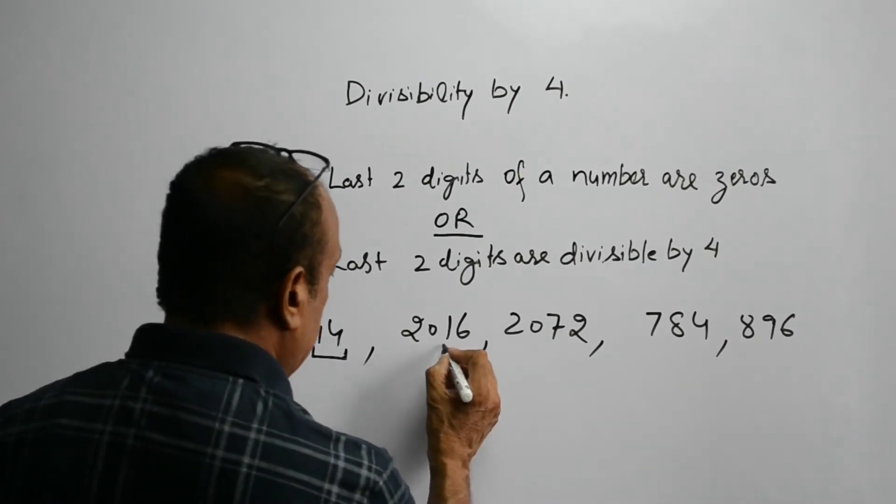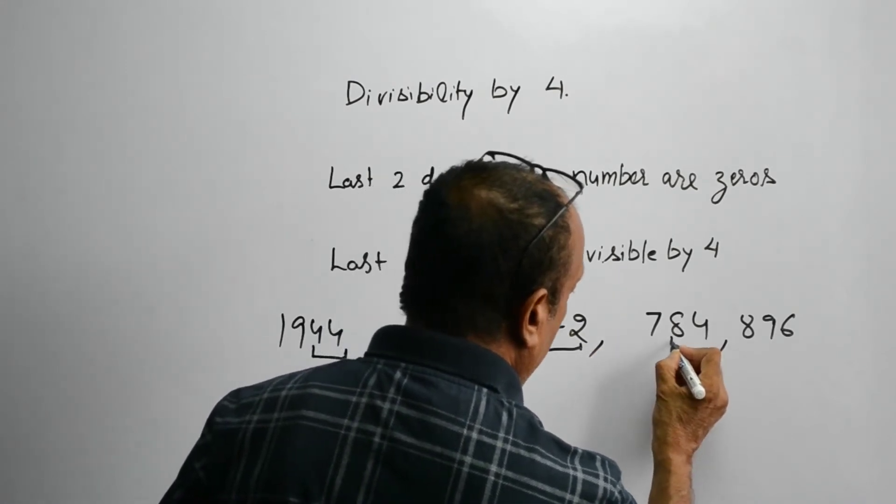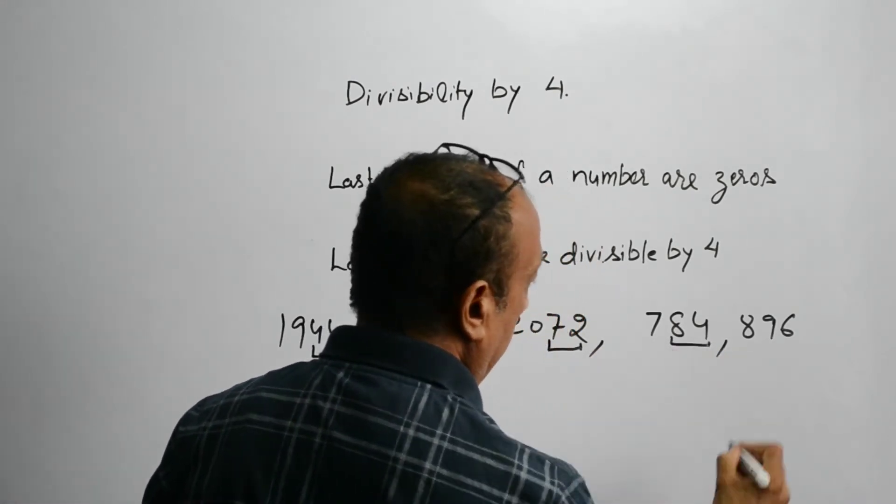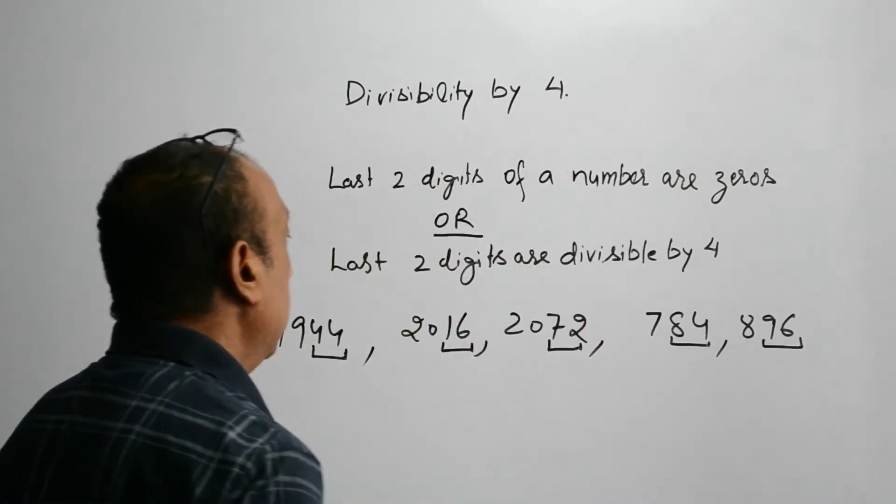16 is divisible by 4, 72 is divisible by 4, 84 is divisible by 4, and similarly 96 is also divisible by 4.